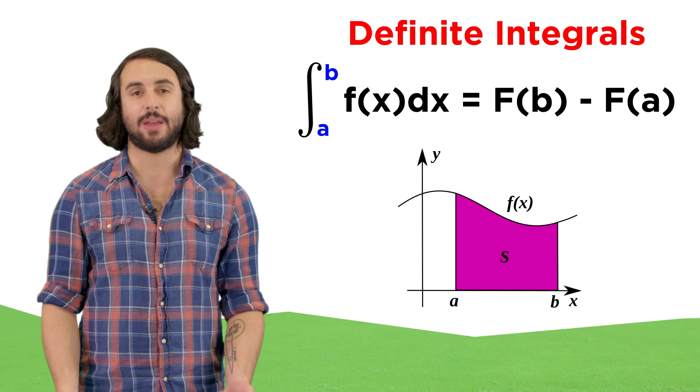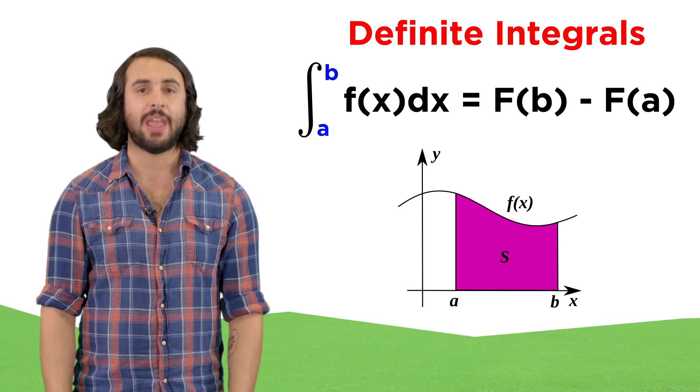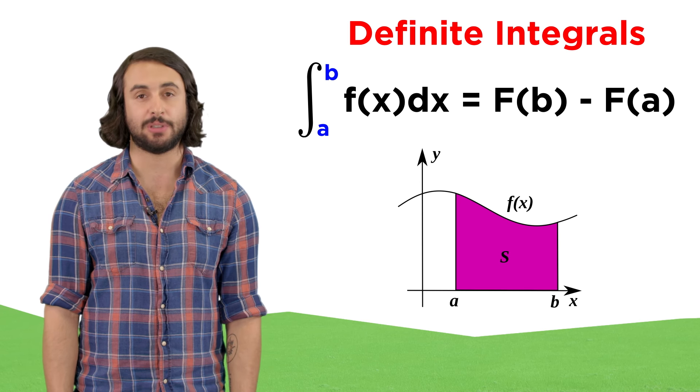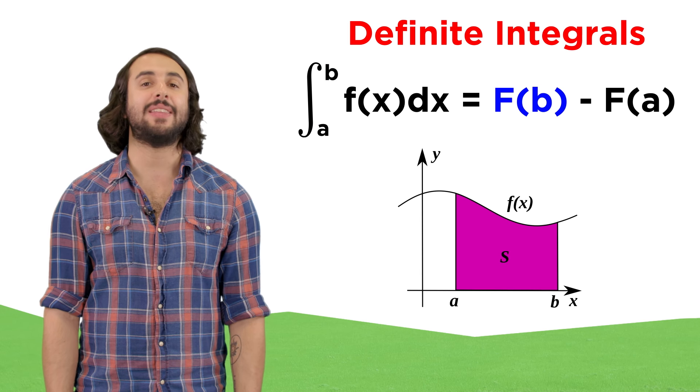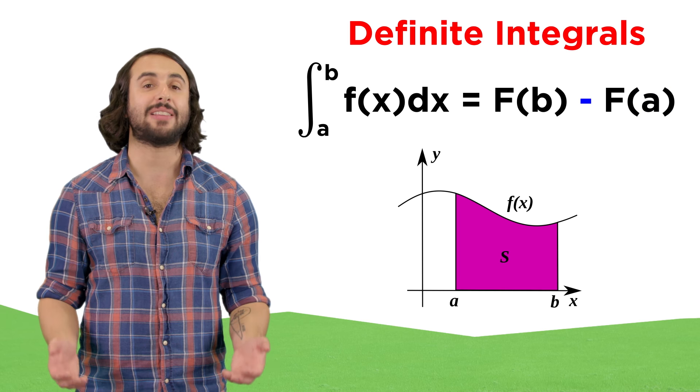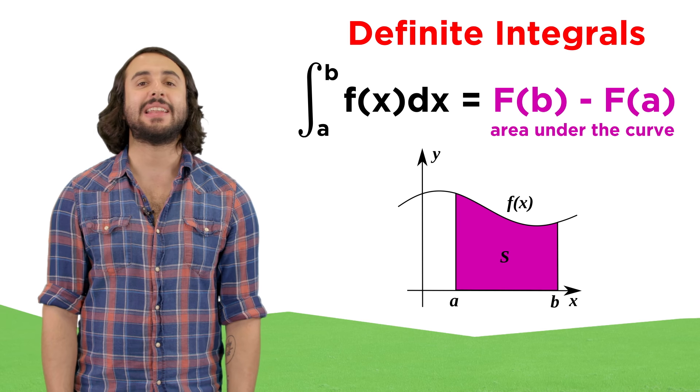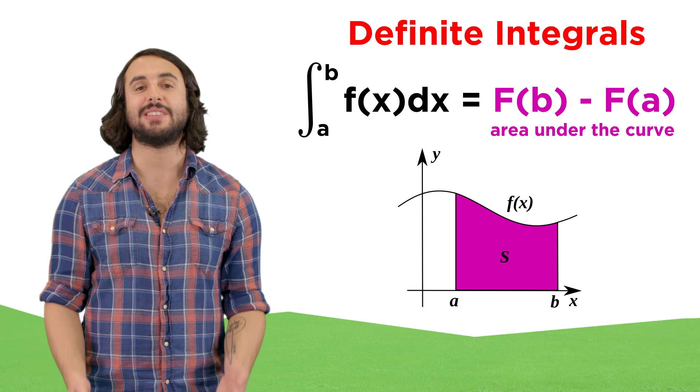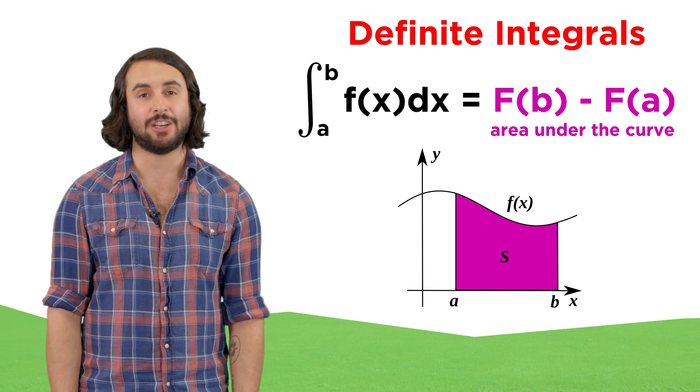When we want to evaluate them within some limits of integration, like with the definite integrals we looked at, it's just a little bit of algebra. We evaluate the antiderivative at the upper limit, then the lower limit, and subtract the latter from the former. That gives us a number that represents the area under the curve within that finite interval.